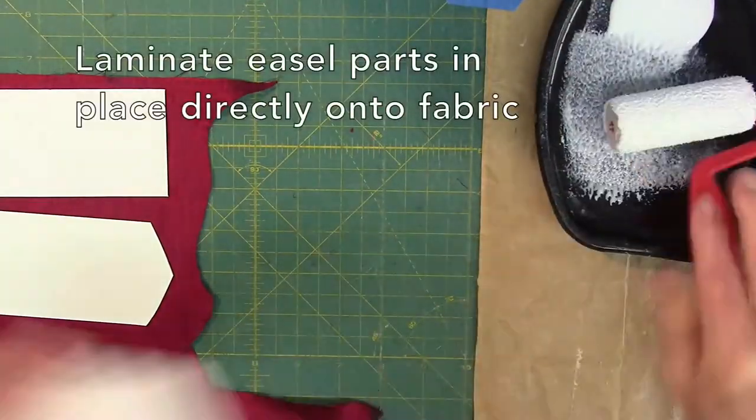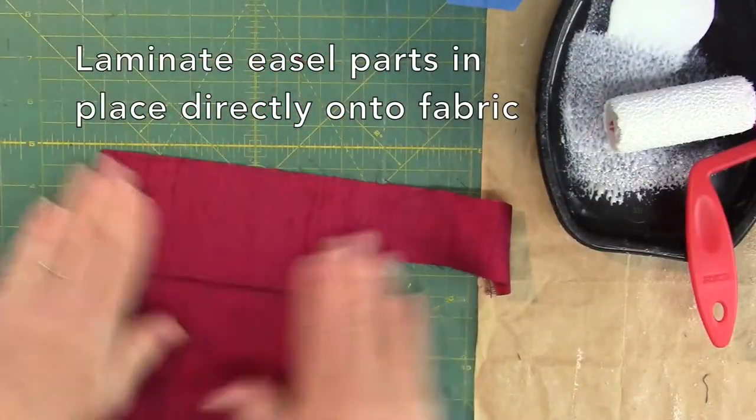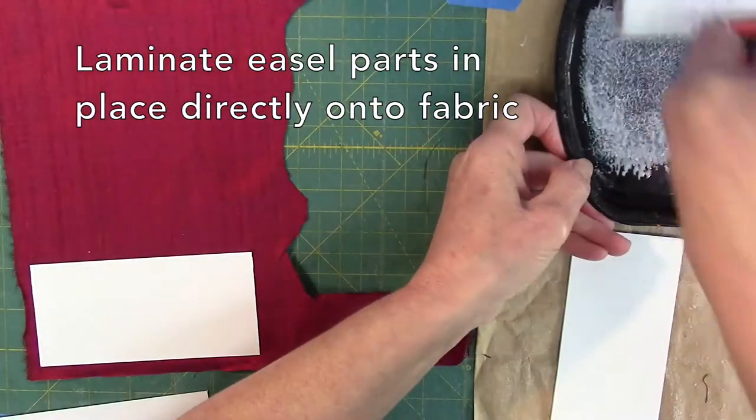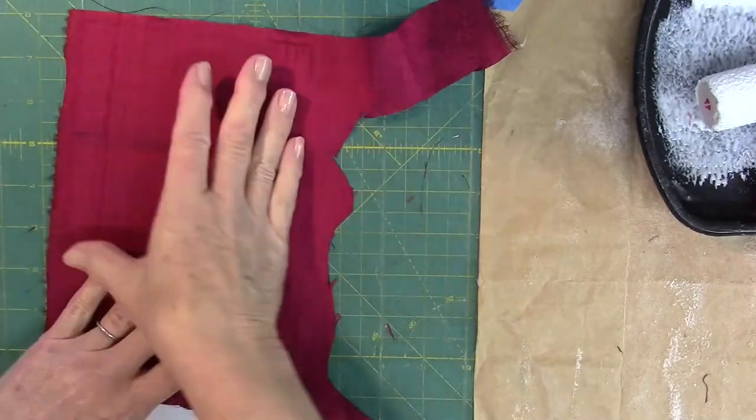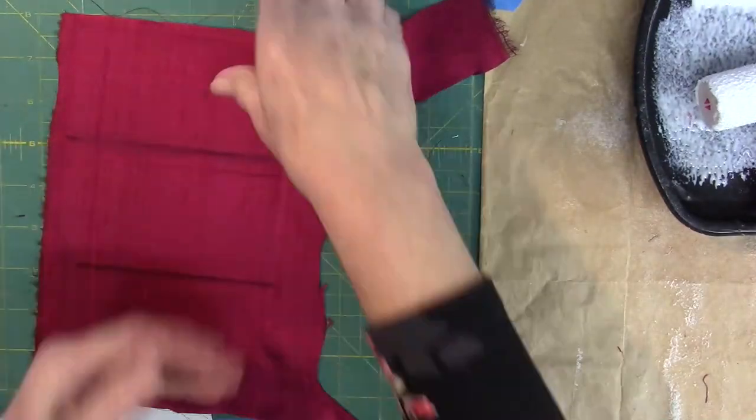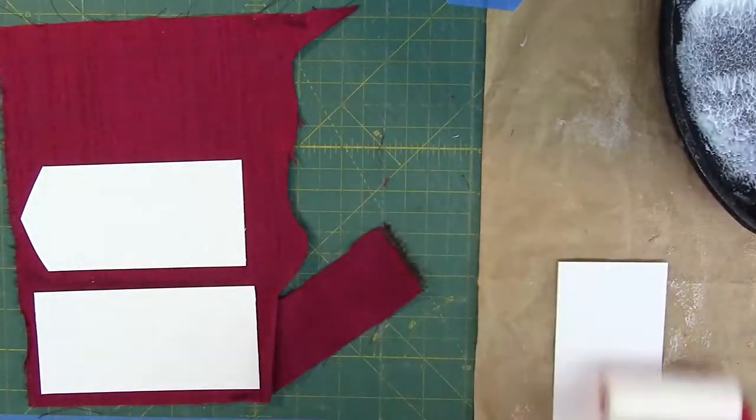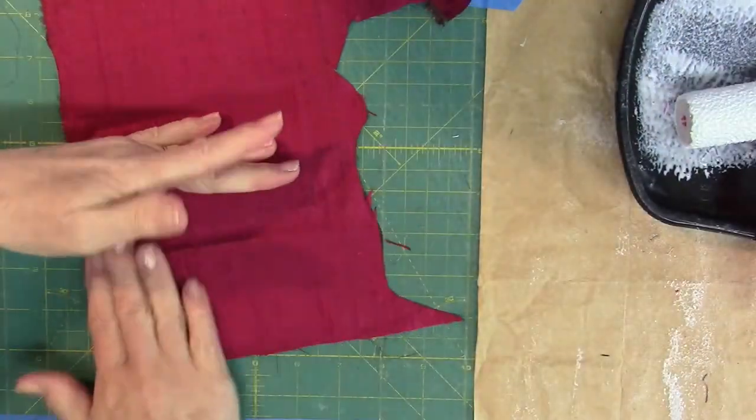Let's laminate the easel parts in place onto the fabric. Don't forget to emboss. Leave a space of one-quarter inch all around each part as a seam allowance, and one of the easel pieces will need a one-inch tab along one short edge.